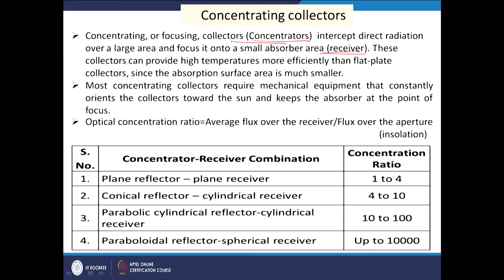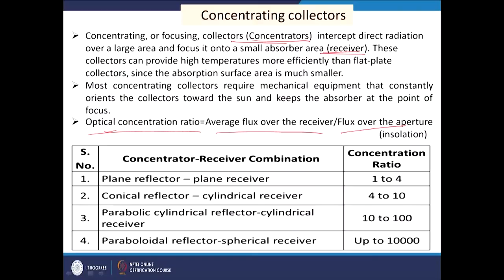The extent of concentration is defined by the optical concentration ratio: the average flux over the receiver divided by the flux over the aperture of the collector — that is, how much insolation is coming on the collector versus how much insolation we are getting at the receiver. We may need to change the orientation of the collector or equip it in such a way that maximum concentration is possible.